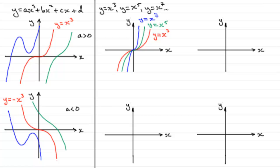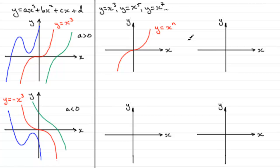We call these kinds of graphs odd graphs — that is, they're graphs that have rotational symmetry about the origin of 180 degrees. So in general those graphs take on this particular form: y equals x to the power n, where n is a positive odd integer. And if we put a minus in front of each one of these graphs, we get a reflection in the x-axis. So we can expect the graphs to look something like this, and this type of graph has the form y equals minus x to the power n.